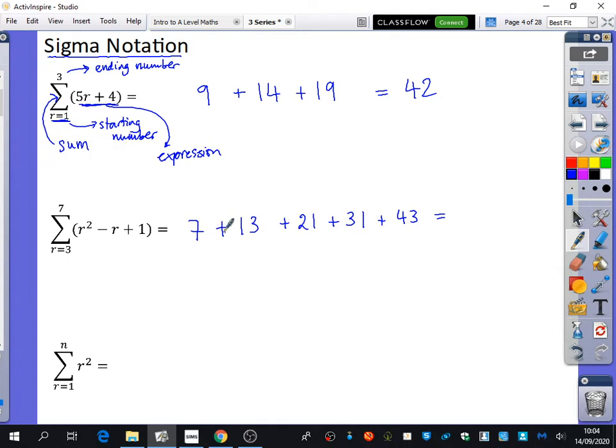Yeah, so what type of sequence is this? This is actually a series because it's got things being added together. That's what makes it a series is things being added. But if we had this sequence, what kind of sequence is this? It's a quadratic. What do you think the nth term of this quadratic sequence is? n squared minus n plus 1.